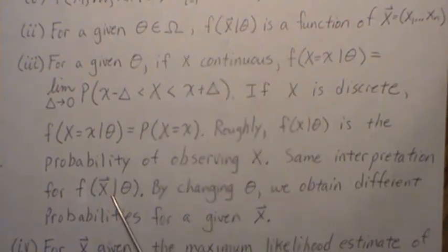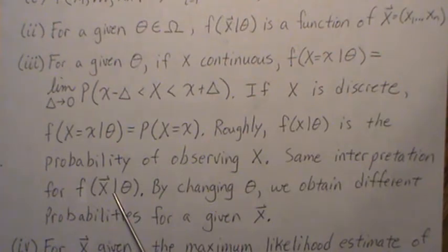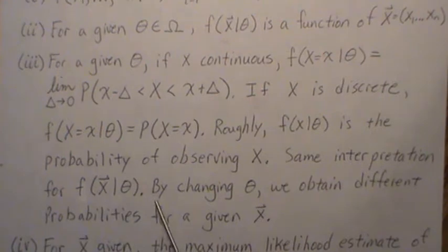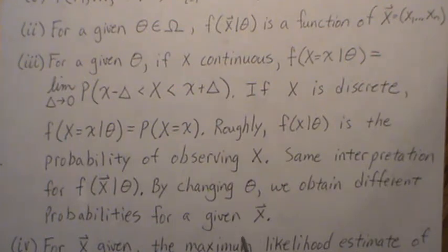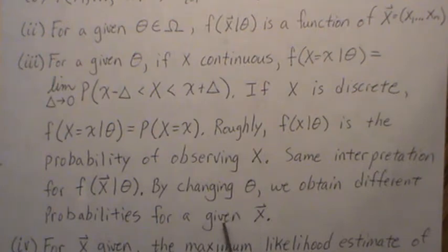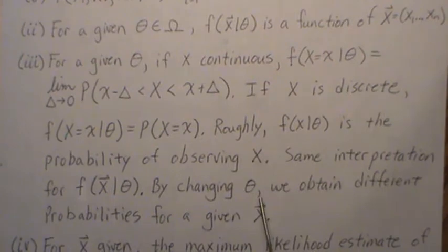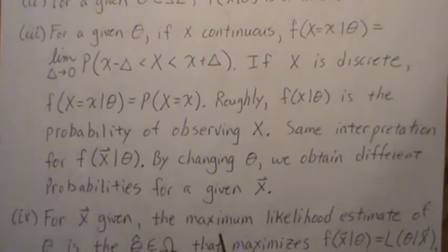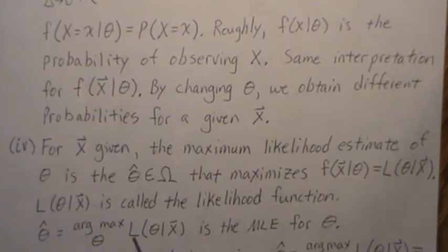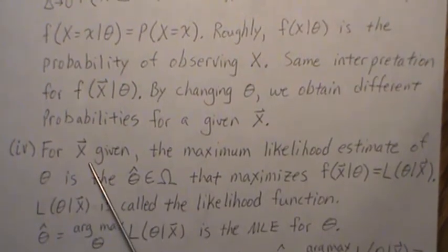The same interpretation goes for the joint PDF or PMF — it's the probability of observing that sample. Here's an extremely important note: by changing theta, we obtain different probabilities for a given X. For instance, if theta is really small, the probability of observing our sample may be high, but if theta is large, the probability of observing that same sample would be small.